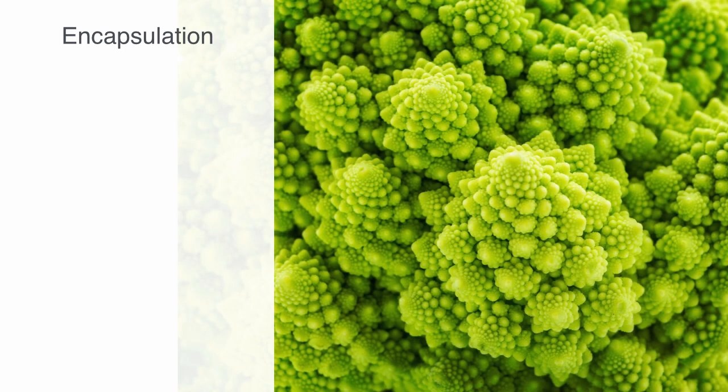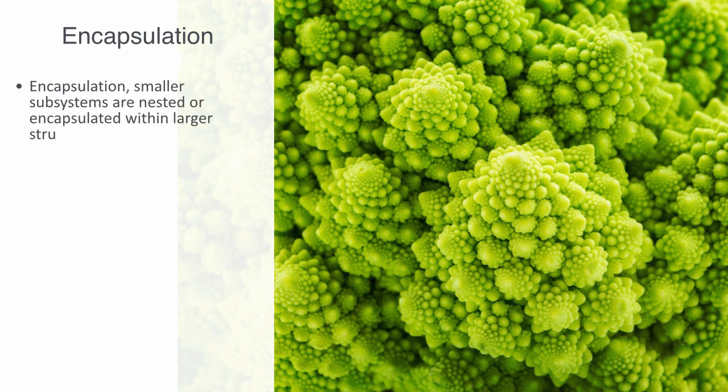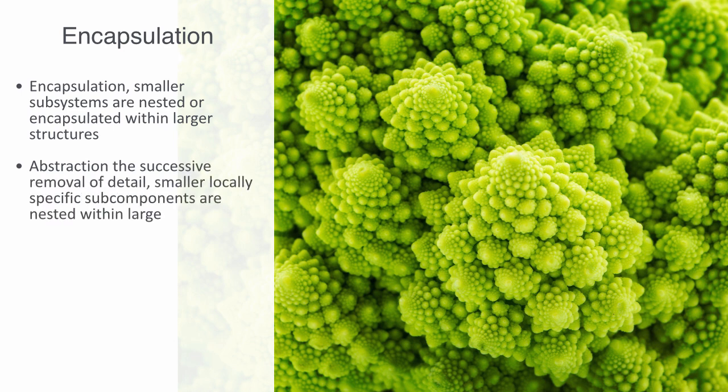Hierarchy and emergence give rise to the design principle of encapsulation, where smaller subsystems are nested or encapsulated within larger structures. Key to this design pattern is the use of abstraction — the successive removal of detail — where smaller, local, specific sub-components are nested within larger, more generic processes and structures. Hierarchical encapsulation through abstraction is central to the structural design of complex systems of all kinds, allowing a functioning ordered system to be achieved by distributing components across different levels.